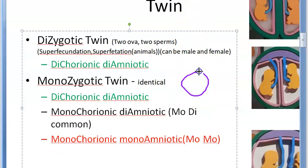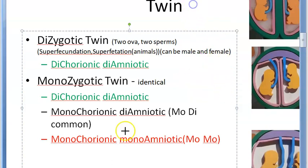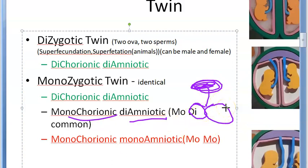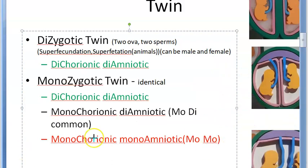If the zygote divides after three days, placenta formation has already begun. Division at this stage results in monochorionic diamniotic twins — they share one placenta but each have their own amniotic sac. These are called MoDi twins, and they are the most common type among monozygotic twins.